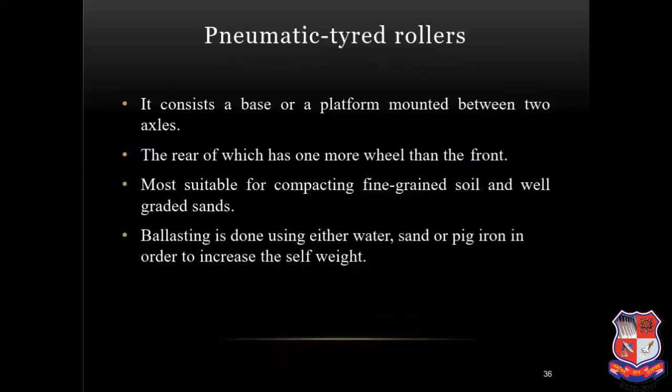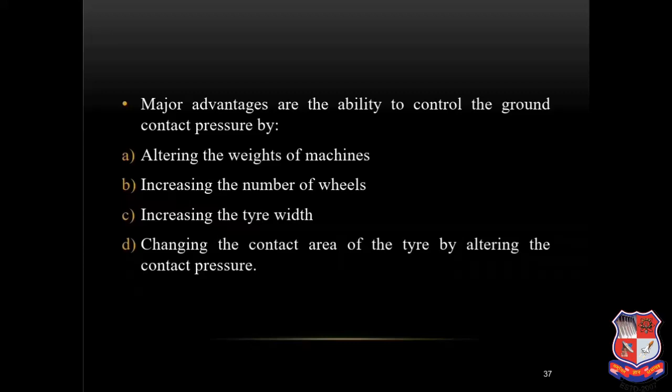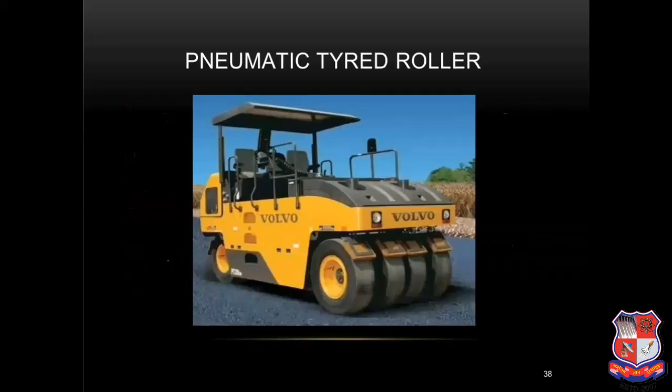Pneumatic tired rollers consist of a base or platform mounted between two axles, the rear of which has one more wheel than the front. Most suitable for compacting fine grain soil and well graded sands. Ballasting is done using water, sand or pig iron to increase the self-weight. Major advantages include the ability to control the ground contact pressure by altering the weight of the machine, increasing the number of wheels, increasing the tire width, and changing the contact area of the tire by altering the tire pressure.